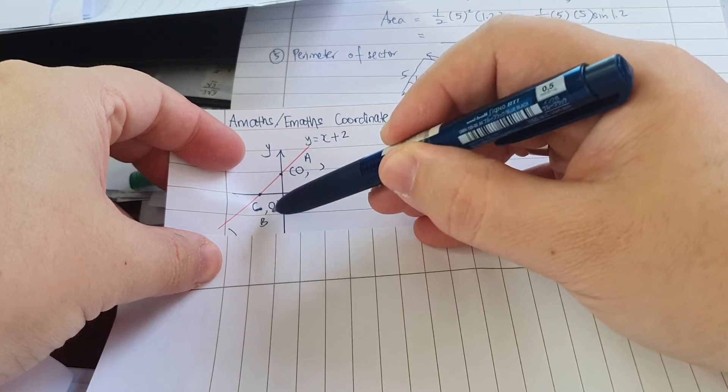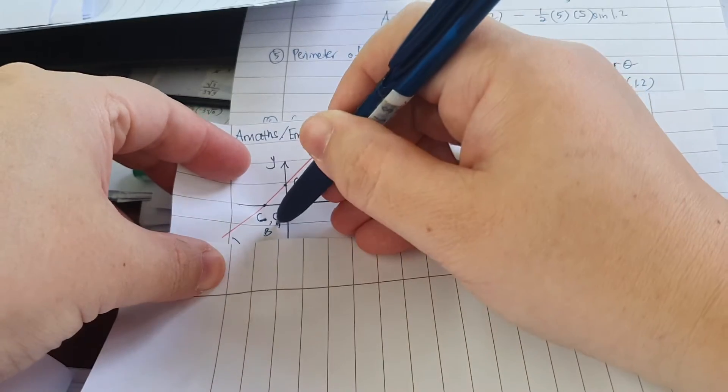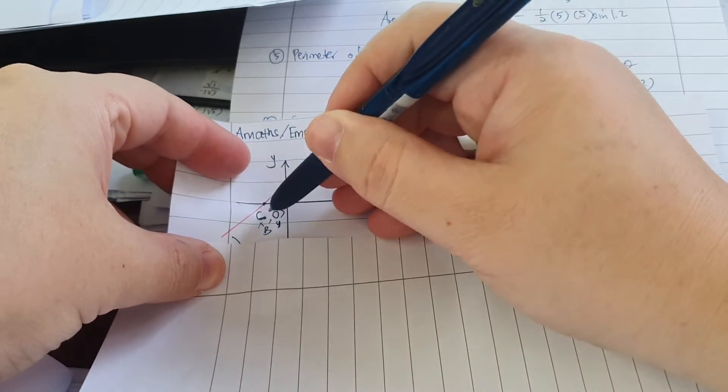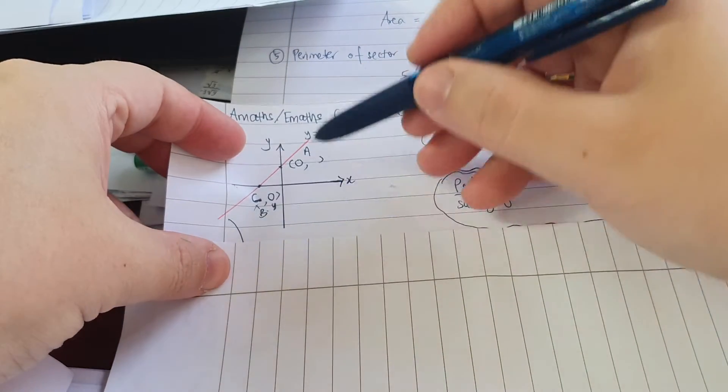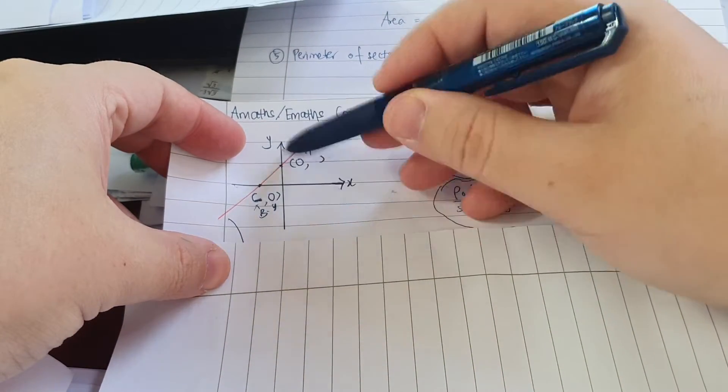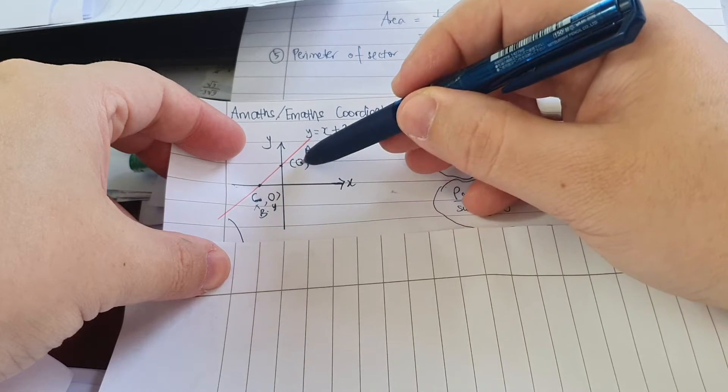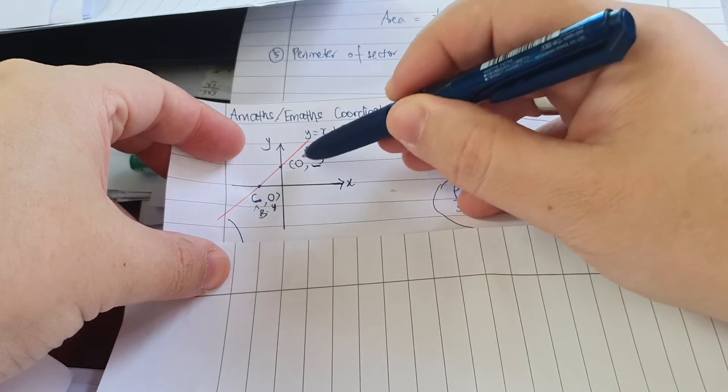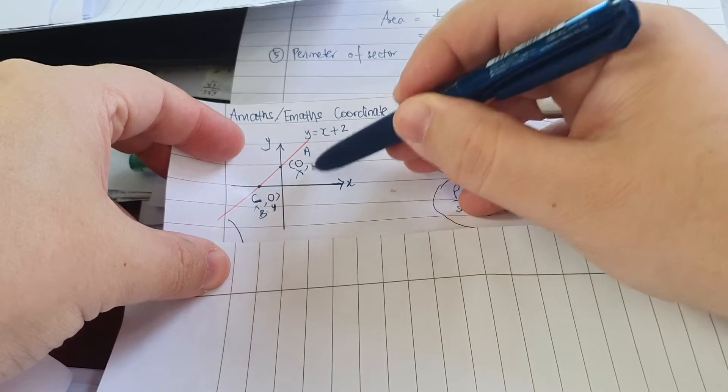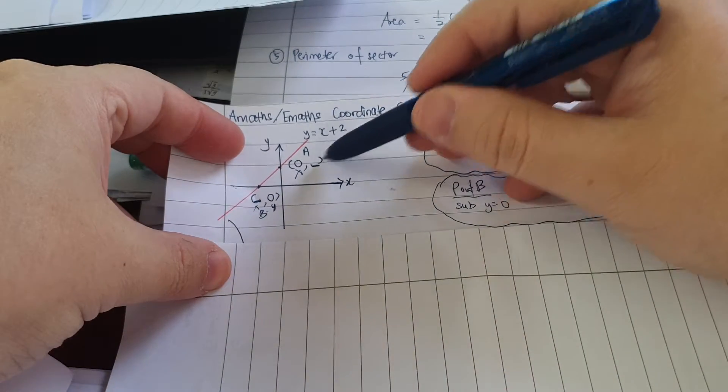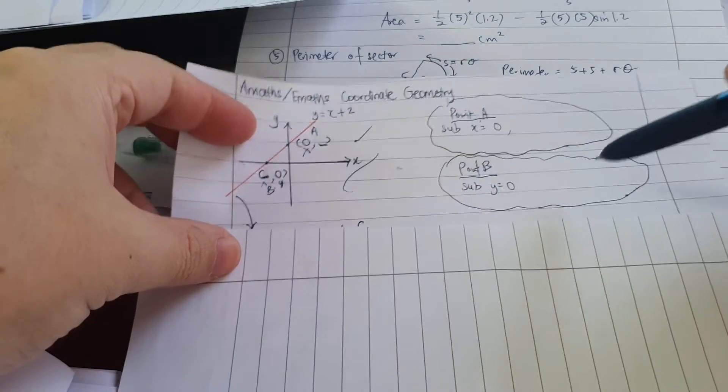That means the Y value must be zero. Are you clear about that? So you set Y equals zero, you'll be able to find point B. Now again, it's usually the same reasoning. If you are standing at the Y axis anywhere here, you will have some Y value. That means your X value is zero, so you set X equals zero, you'll be able to get point A. I hope this is clear, you can go and try it out.